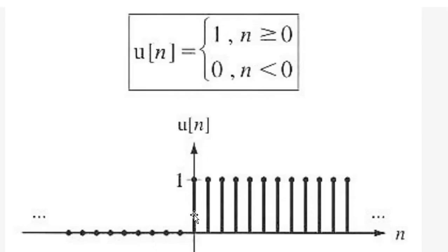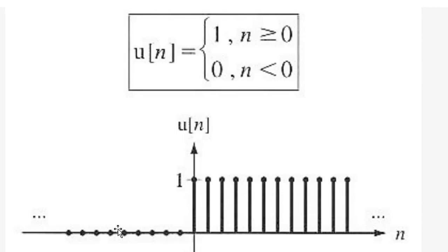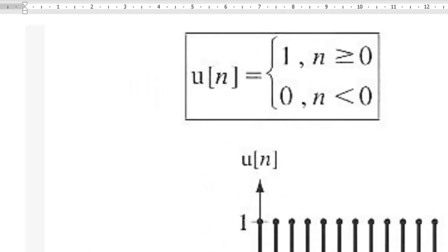Since we cannot define the unit step function for n varying from minus infinity to infinity, we shall define it for n from minus 5 to plus 5 — that is, at n equal to minus 5, minus 4, minus 3, minus 2, minus 1, 0, 1, 2, 3, 4, 5.